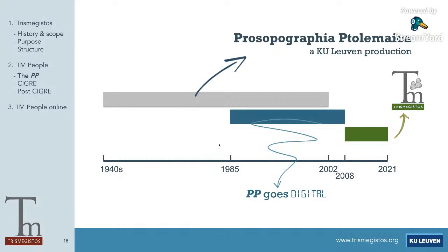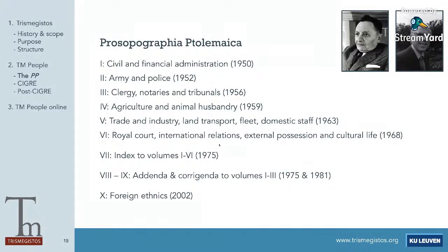The predecessor to TM People is the Prosopographia Ptolemaica. The aim of that project was to collect all inhabitants of Ptolemaic Egypt — initially all people with a title or an occupation. You can see an overview of the different volumes that appeared: starting with civil and financial administration, the army and police, clergy, non-royal tribunals, agriculture and husbandry, trade and industry, everyone involved in transport on land and water, and then the fifth volume revolved around the courts and international relations. There was a long gap used to create indices and an addenda, and then in 2002 the final paper volume appeared, focusing on people who had a foreign ethnic.